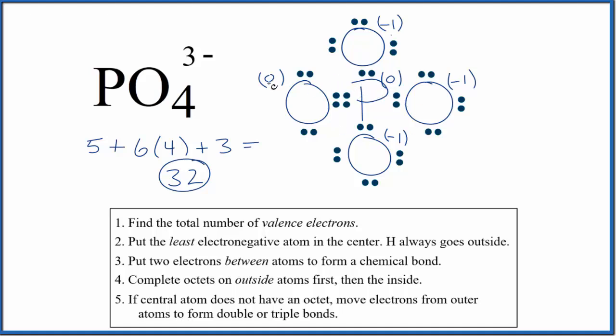And the formal charges, we have zero here and zero here. We have negative one, two, three. That's the charge on the ion. So that makes sense.